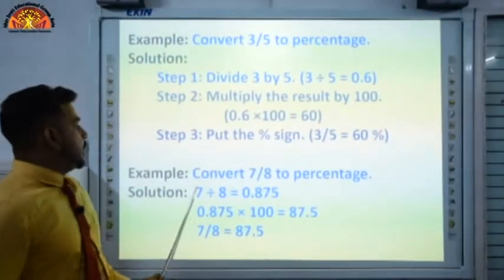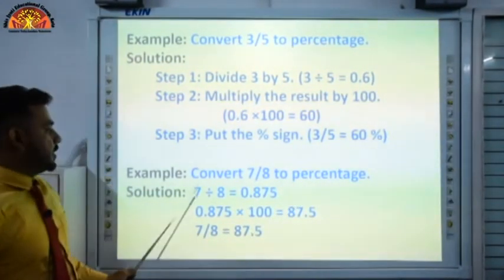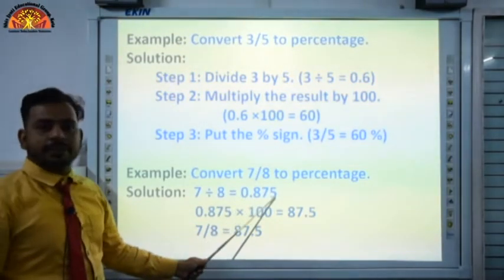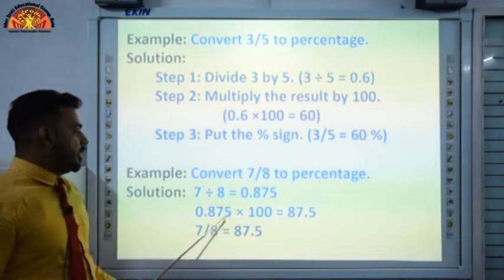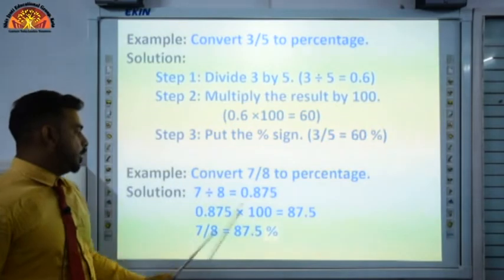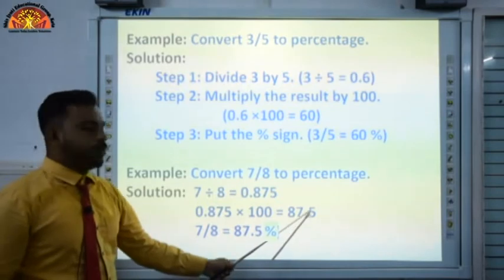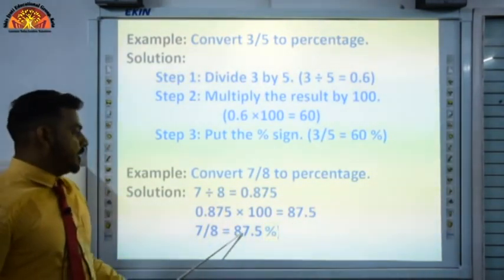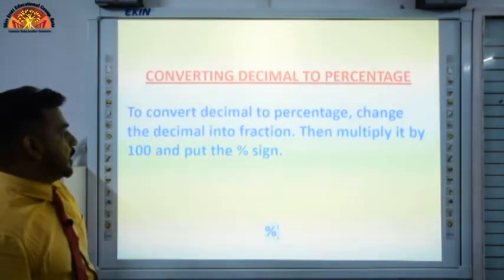Similarly, convert 7/8 to percentage. First, 7 divided by 8 gives 0.875. Then multiply 0.875 × 100: decimal shifts 2 places, giving 87.5. Put the percentage sign — answer is 87.5%.